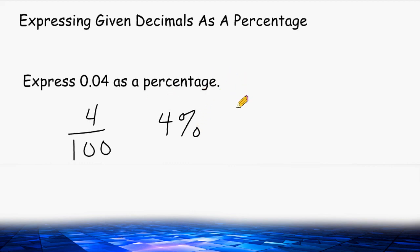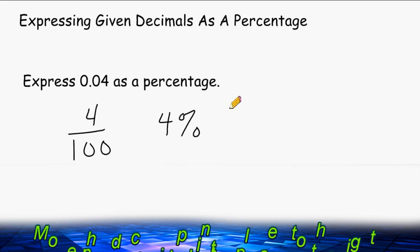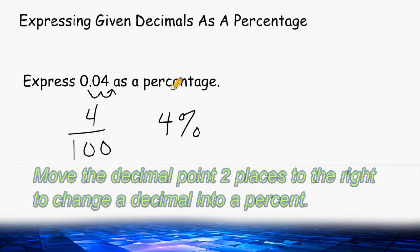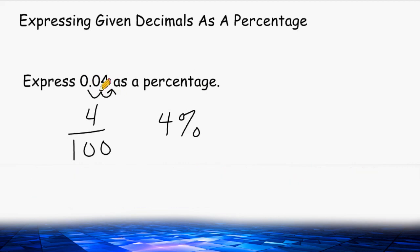When we were changing percentages into decimals, we moved the decimal point two spaces to the left. Now we do the exact opposite — take the decimal point and move it two spaces to the right to turn it back into a percentage. Moving the decimal of 0.04 two spaces to the right gives us 4.0, or just 4, and we write the percentage symbol to get 4%.